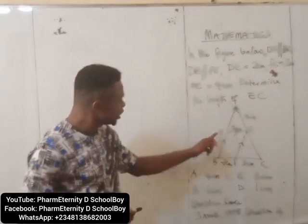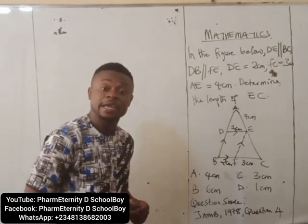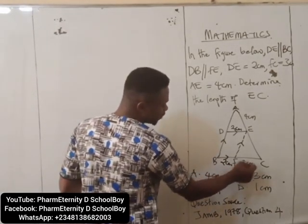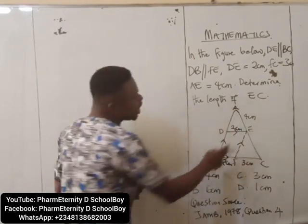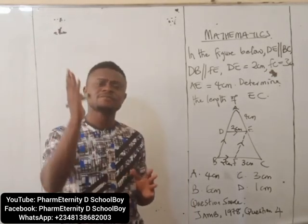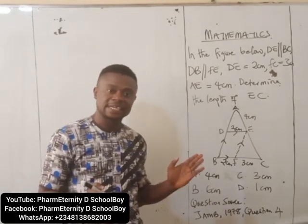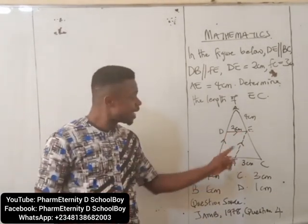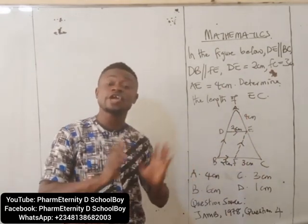That's the implication. If DE and BF are opposite sides of a parallelogram, they are equal. Now we have determined BF. We know FC and we know AE, but we don't know EC. In a triangle, if a line runs parallel to one side of a triangle, that line divides the other sides of the triangle into equal ratios.